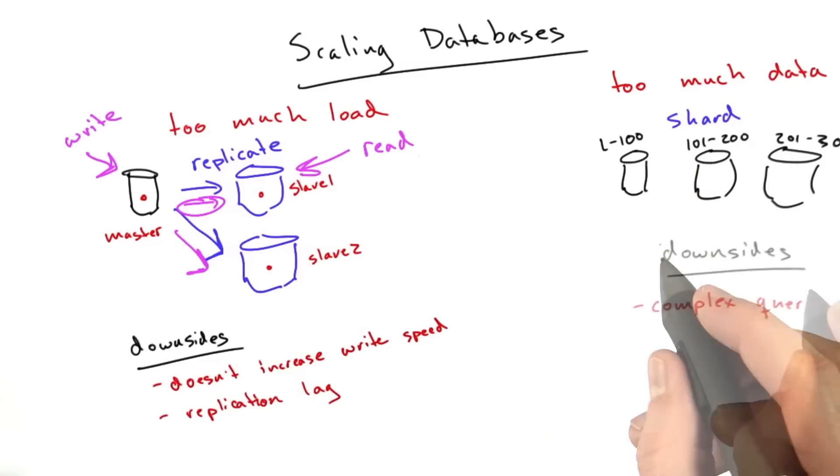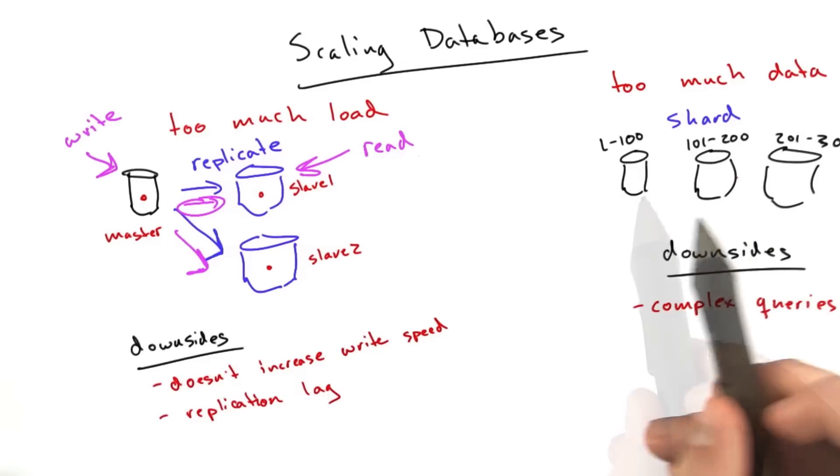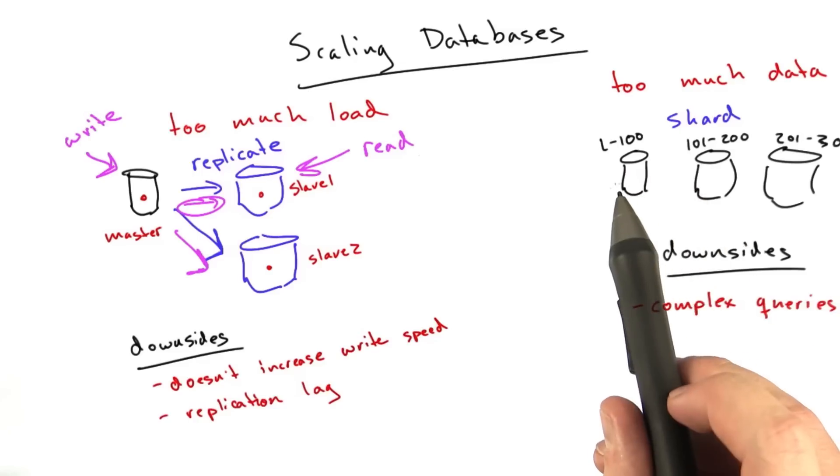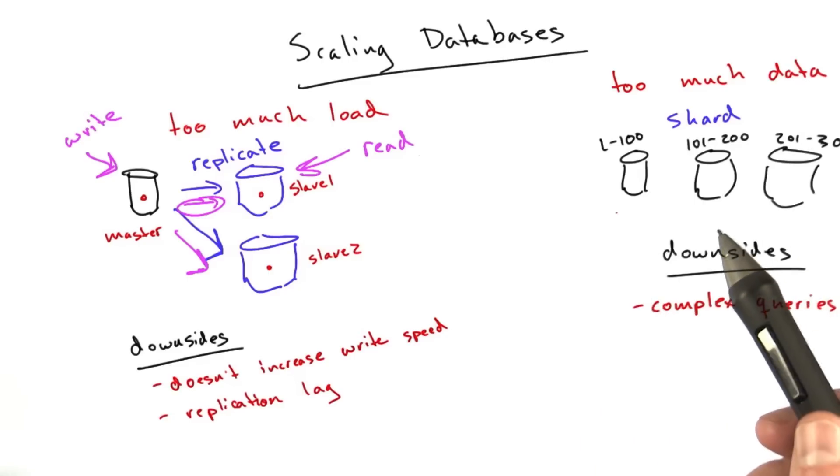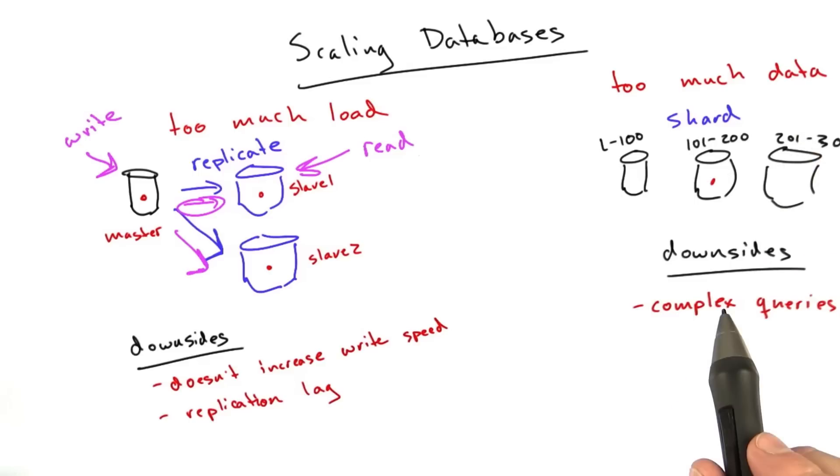This is cool because now if we triple our write load from the scenario over here, we have 3 database machines to handle it. Likewise, we already have 3 machines to handle the read load. And of course, you can replicate these machines as well, and a lot of systems both shard and replicate your machines if you really want to get fancy. But there are some downsides to sharding as well.